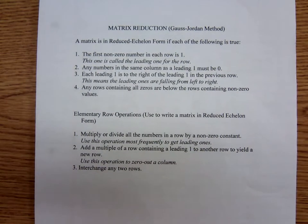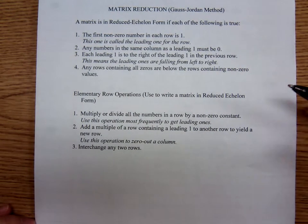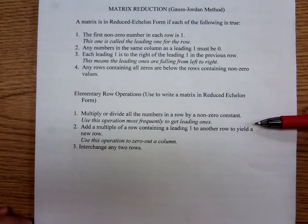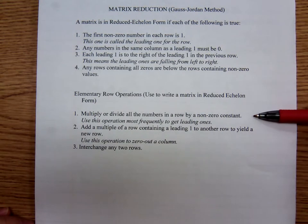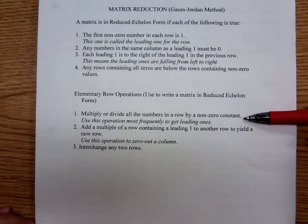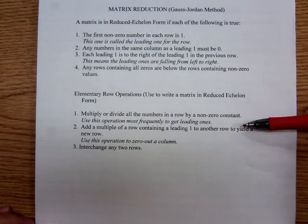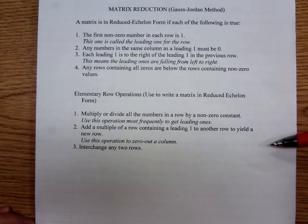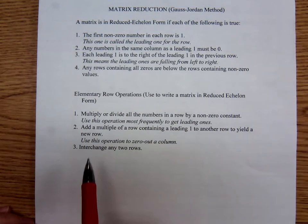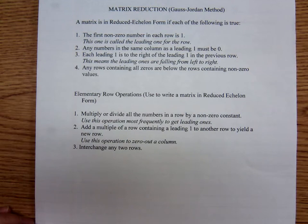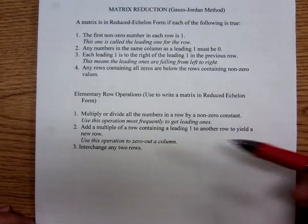To get the matrix in reduced echelon form, we have three elementary row operations. First, we'll multiply or divide all the numbers in a row by a non-zero constant — that's the operation we use most frequently to get a leading one. Second, add a multiple of a row containing a leading one to another row to yield a new row. This is the operation we'll use most frequently because if a matrix is in reduced echelon form, the most common number should be zero.